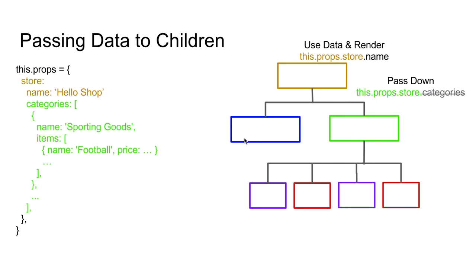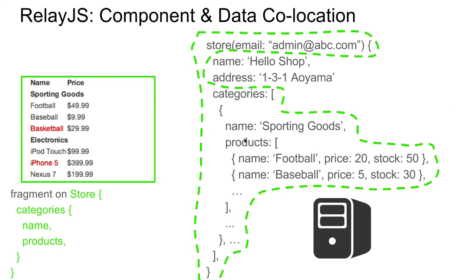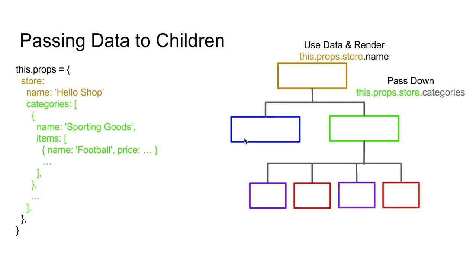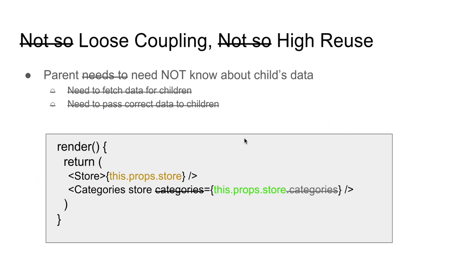What about passing data to the children? This is where RelayJS really shines. The top component will just require the store name as usual, but it does not need to know that it needs to pass the categories to the child. All it needs to do is pass the entire 'this.props.store'. This is because the React component for categories and products already declares that it's going to take the categories from the store. So by just passing down the store, it is capable of finding which part of the data it requires. Coupling becomes very loose and component reuse becomes very high, because parents do not need to know about the child's data.